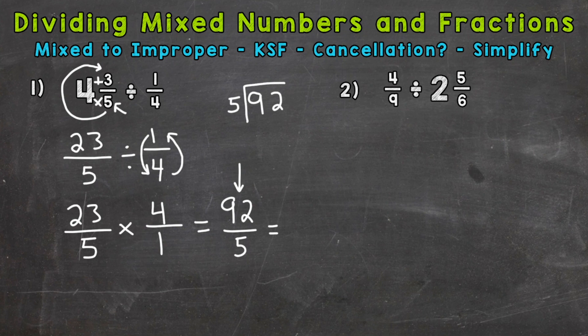It would be okay to come over to the side and write out that problem. 9 divided by 5 is 1. 1 times 5 is 5. Subtract, we get 4. Bring down our 2. So 42 divided by 5 is 8. 8 times 5, 40. Subtract, we get a remainder of 2.